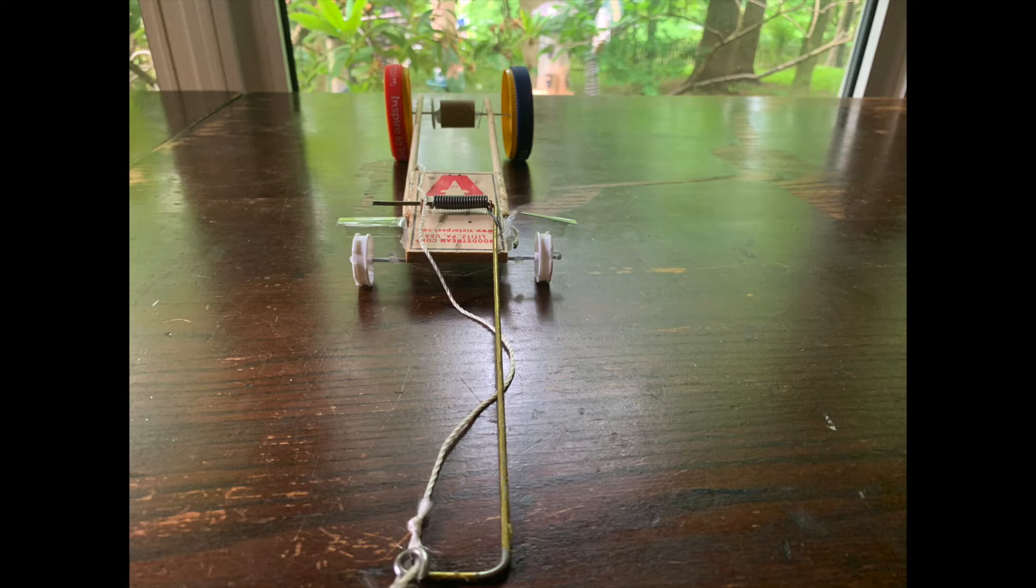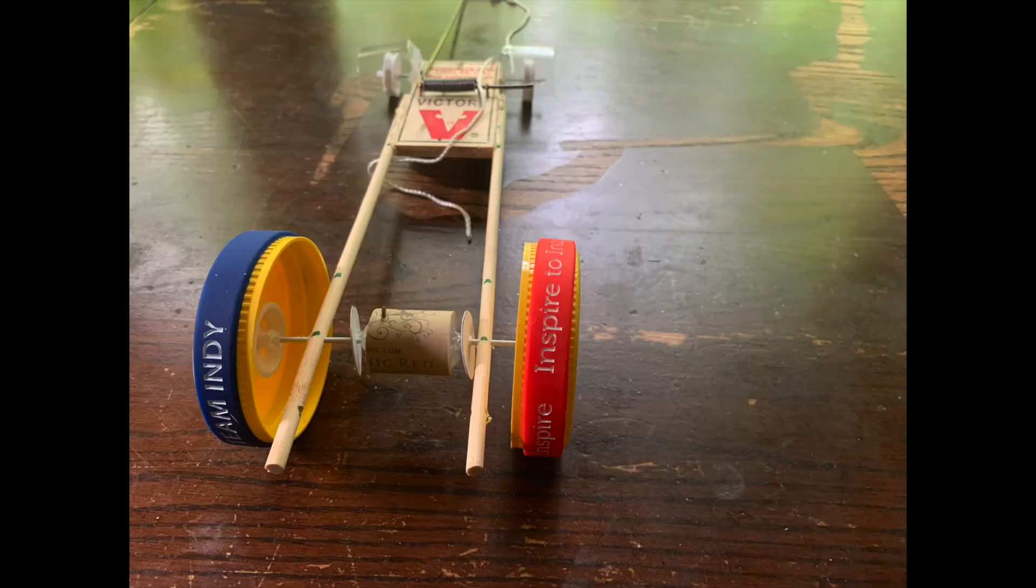I used a thicker wire as the lever arm, which is the same length as the car. The cork on the back axle allows the string to grip to the wire and move the axle, which is made out of a hanger, easier.